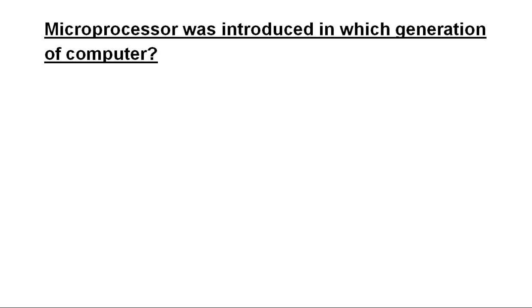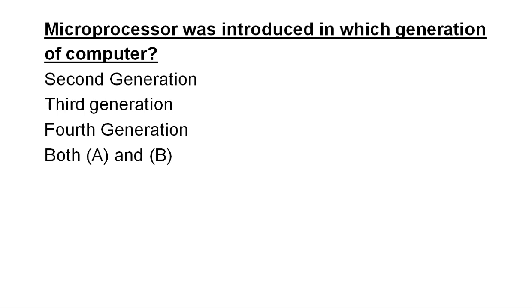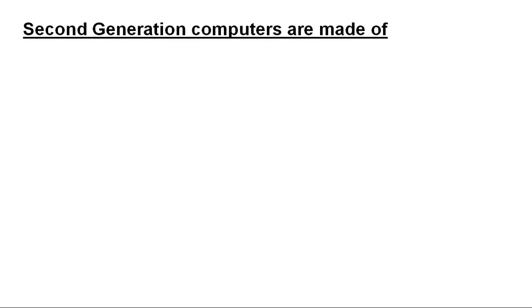The microprocessor was introduced in which generation of computers — second generation, third generation, fourth generation, or both second and third? The microprocessor was introduced in the fourth generation of computers. Second generation computers are made of transistors.